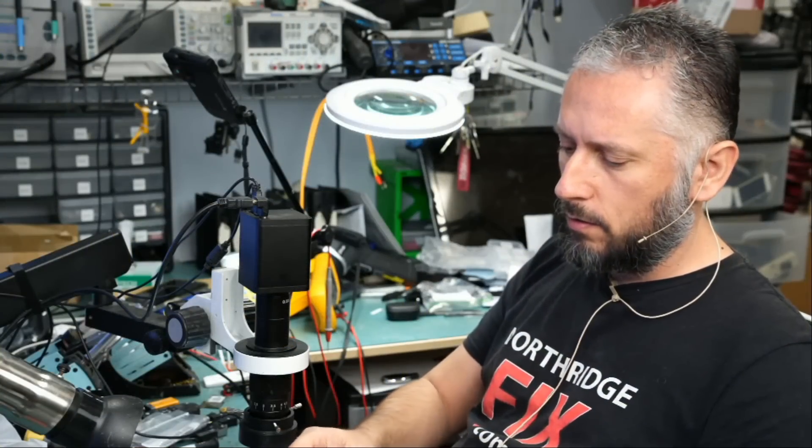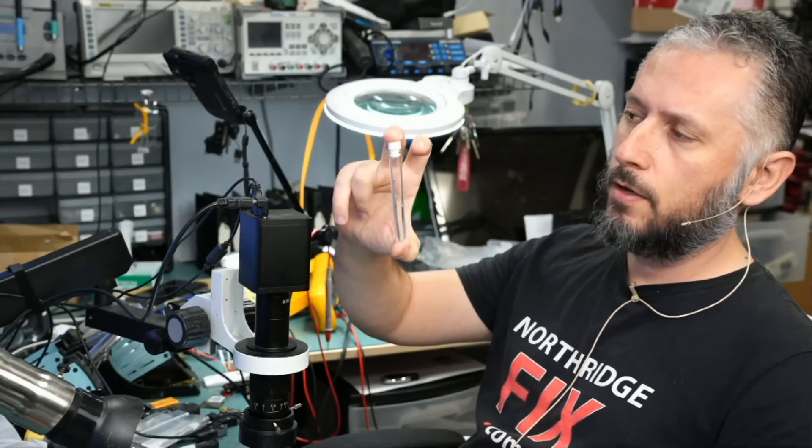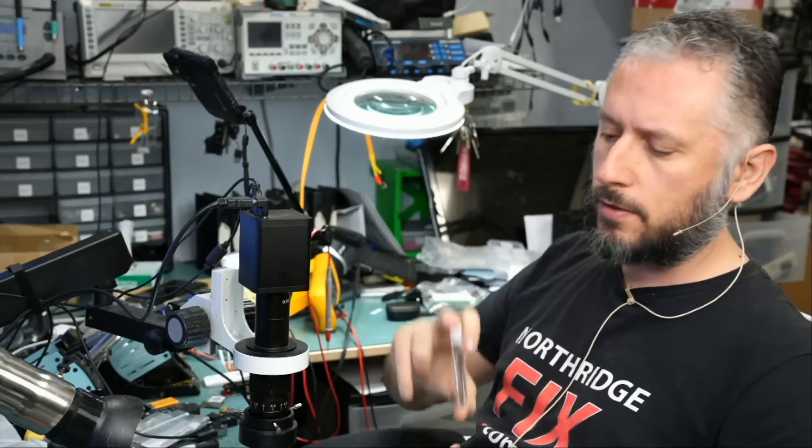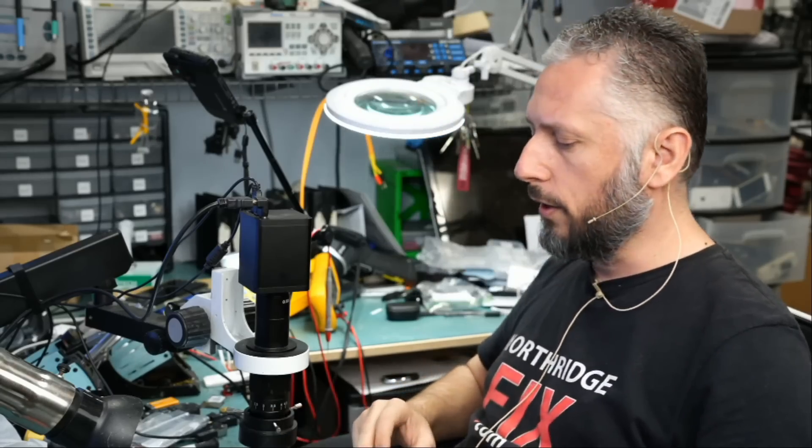You can buy low melt solder from our website. Just log in to northbridgefix.com, click on shop. Low melt solder comes in a tube like this with six sticks. They will last you a very long time, because a little bit of low melt solder goes a long way.